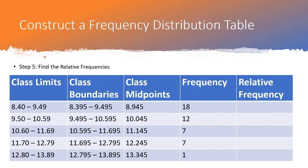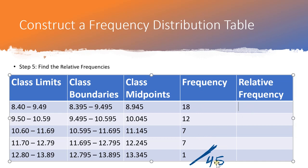Relative frequency means the frequency relative to the total. First confirm your total frequency equals your sample size — adding up all frequencies should give 45. If it doesn't, you may have made a mistake. Relative frequency is calculated by dividing each class frequency by the total. For the first class: 18 divided by 45.